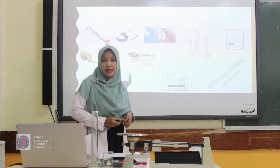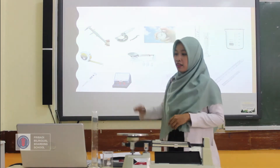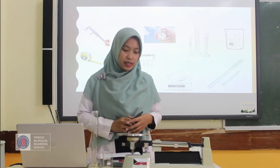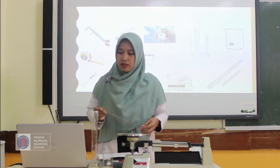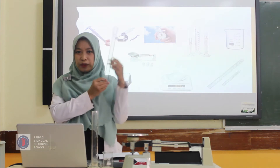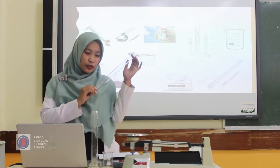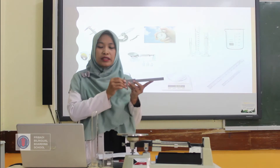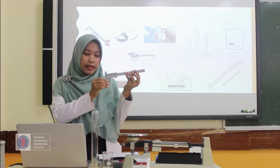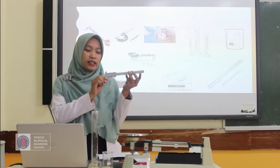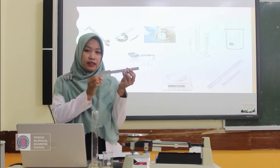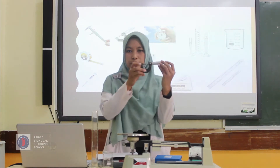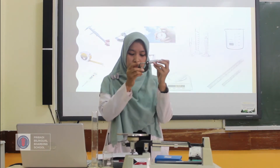For measuring something, a scientist needs apparatus — a measuring tool. I've prepared some apparatus here. Could you name them? This is a ruler. How about this one? This is a vernier caliper — it can measure length. And also this apparatus: we call this a micrometer screw. It can also measure length.